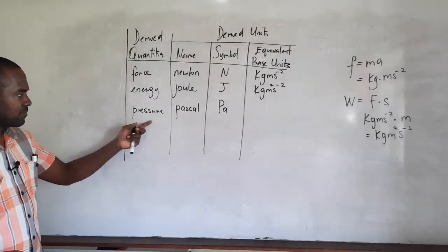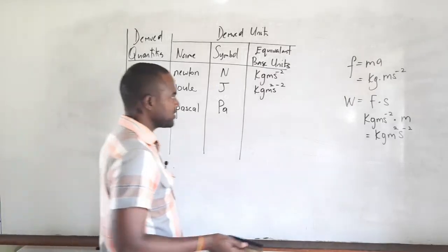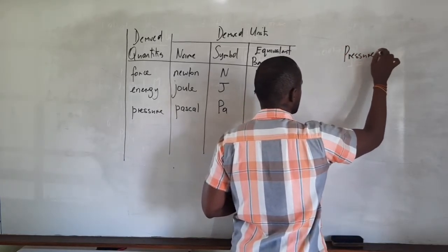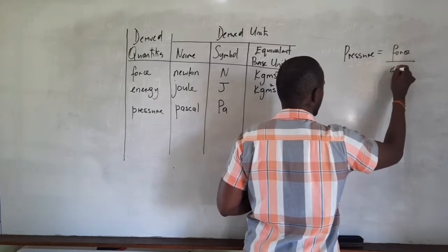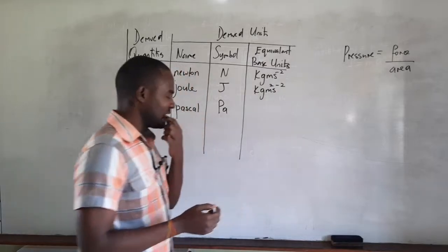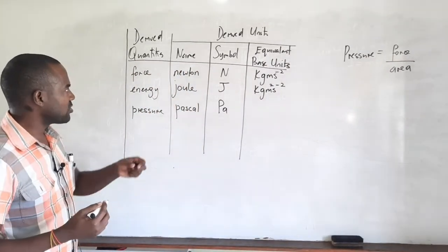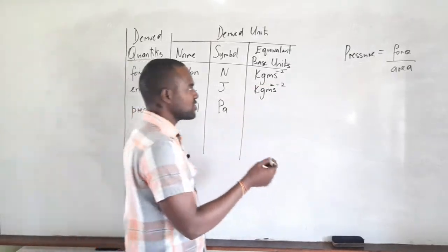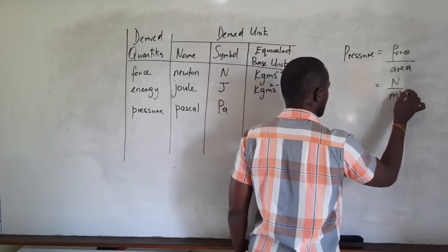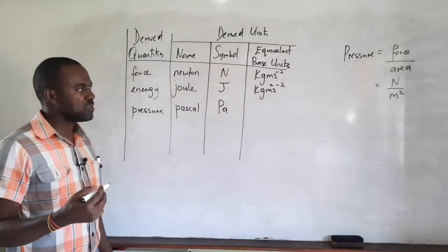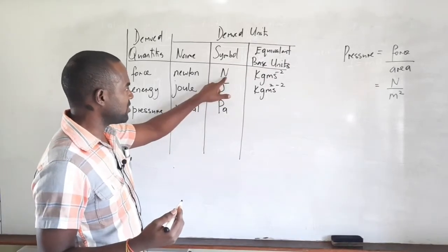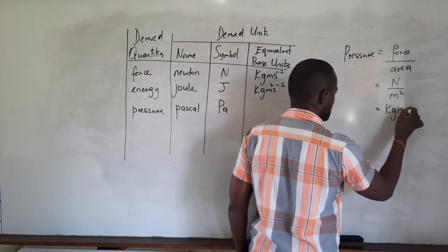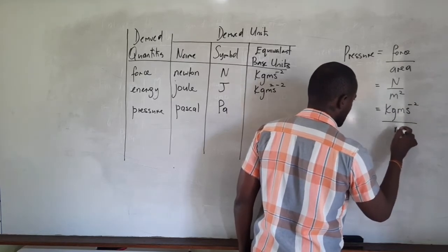To express the pascal in terms of its base units, we go back to the defining equation: pressure equals force divided by area. The unit of pressure is therefore the newton divided by meter squared. Since we must express everything in base units, we replace the newton with its base unit equivalent: kilogram meter per second squared, divided by meter squared.